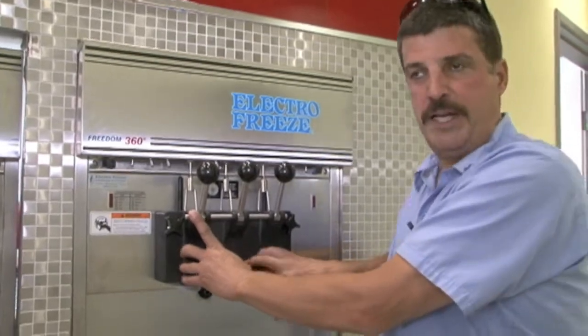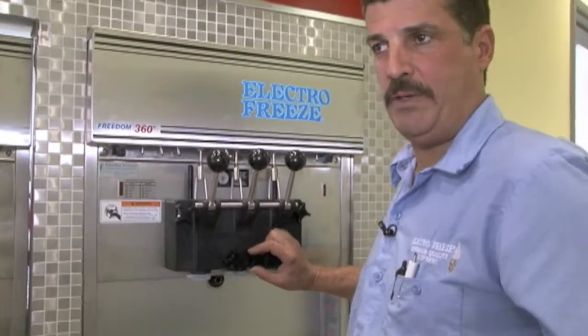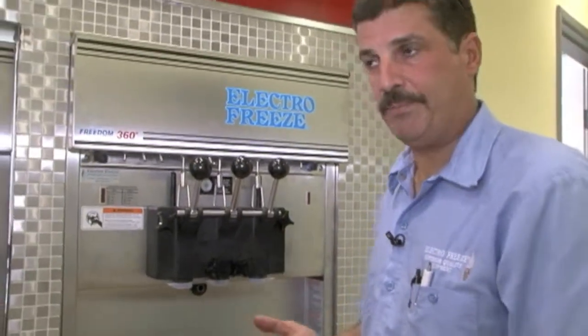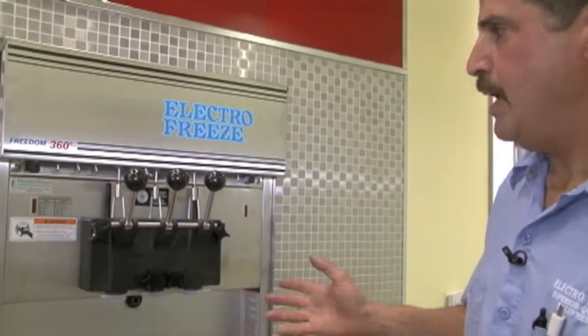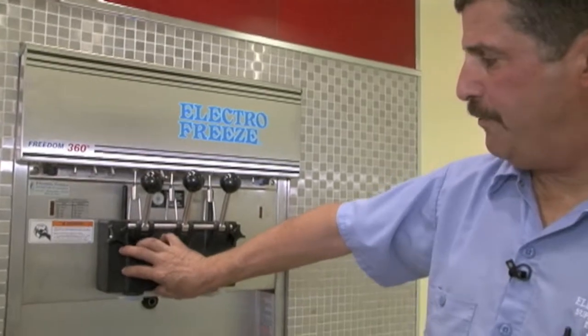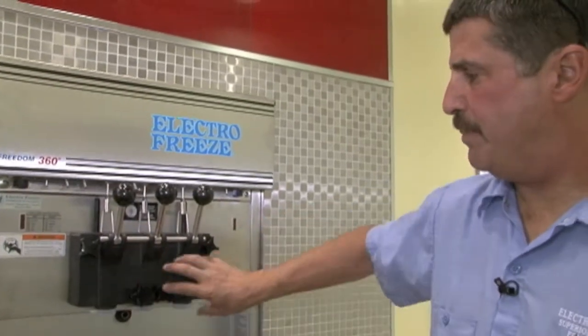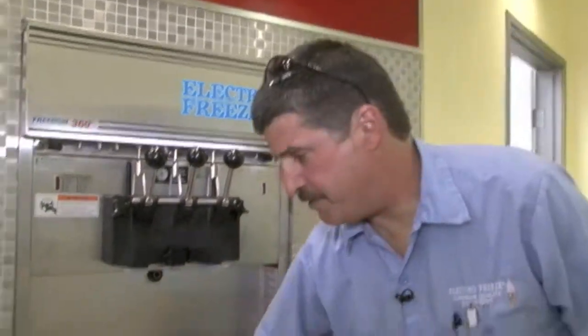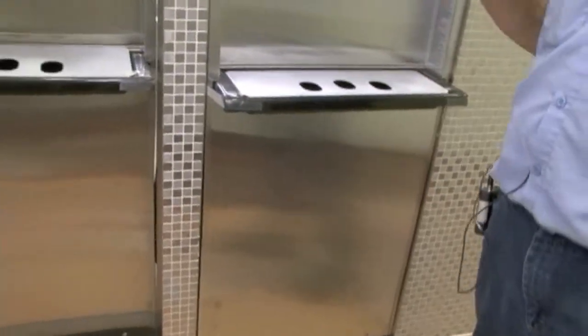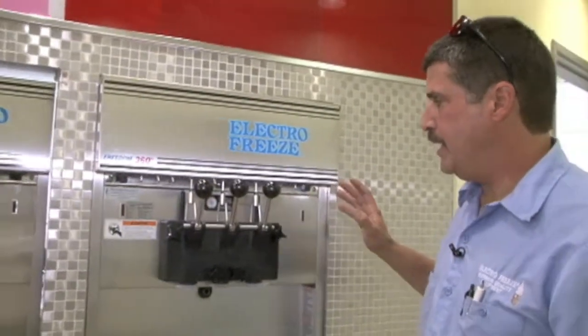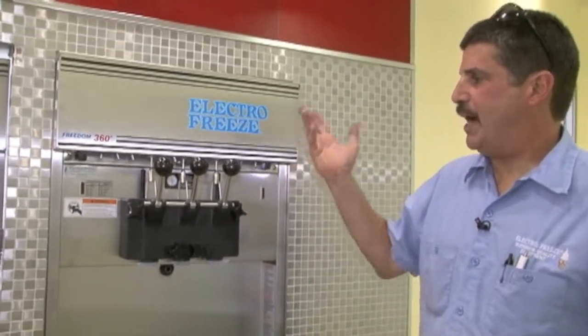So the machine doesn't have to work all night. It's not going to beat up your product all night because no one's pulling any product out. You don't have product breakdown. Keeps it below 41. It's set at 38 degrees in the barrels. And of course your refrigerator will be on all the time, and that's your night operation.